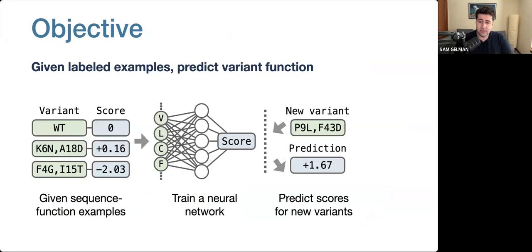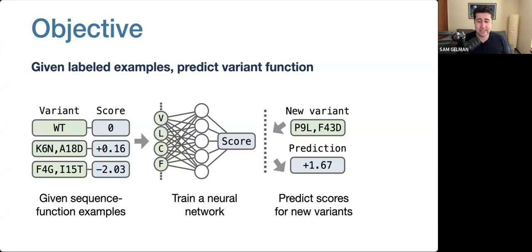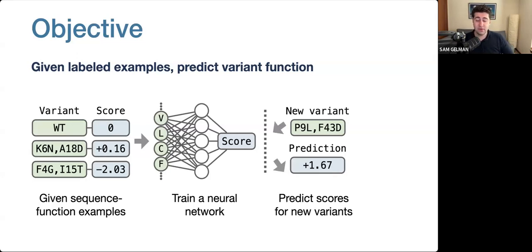Our objective is to take a set of labeled sequence-function examples and use them to train a model that can predict the functional activity of protein variants. The data for this task could come from high-throughput experiments like deep mutational scanning, or maybe from low-throughput assays that test a much smaller number of variants. Regardless, each variant in our data comes with an associated functional score, which tells us how well the variant performs a specific function — such as binding affinity, thermostability, and so on.